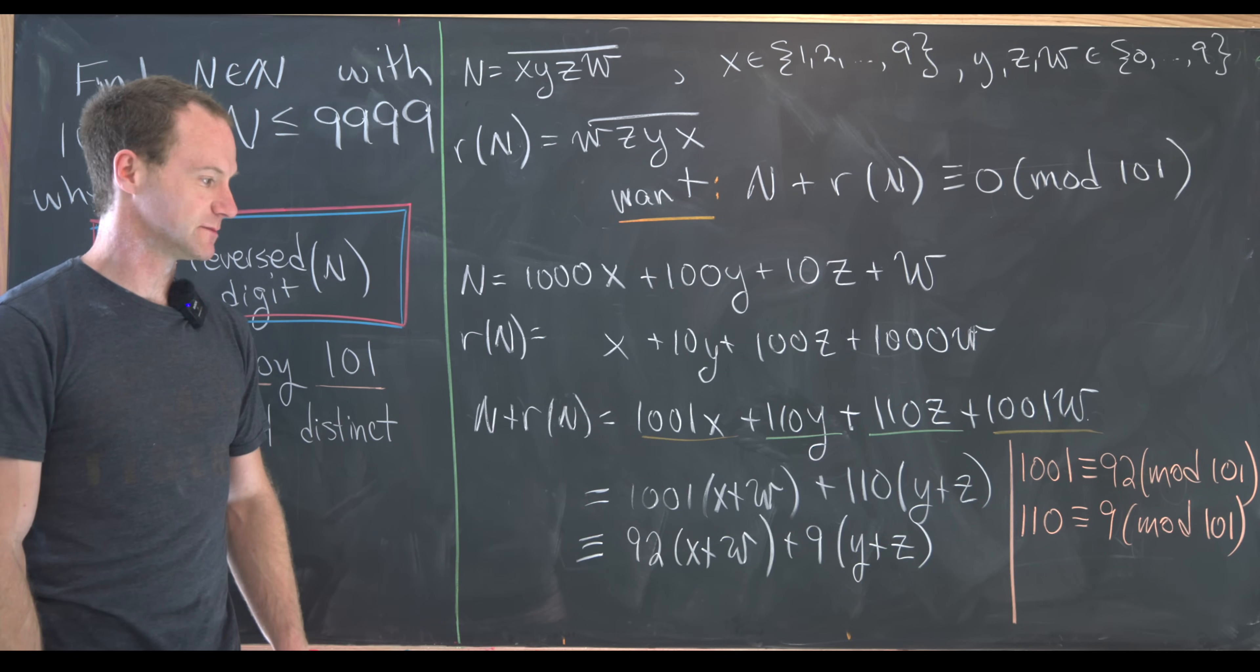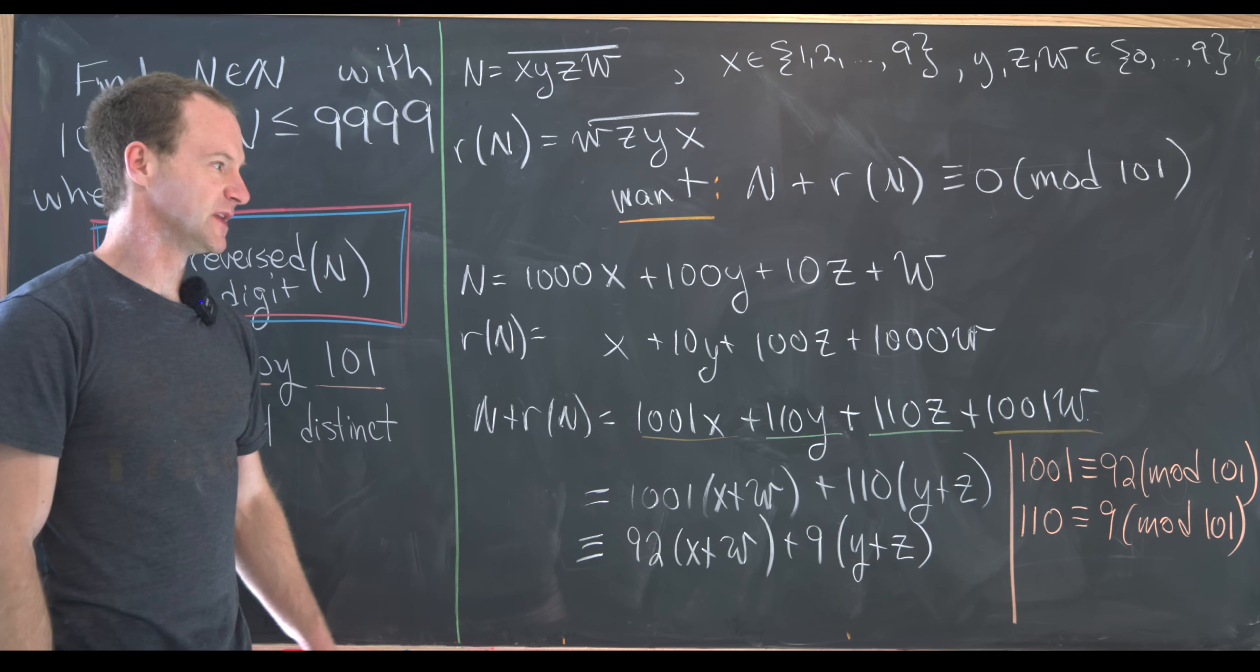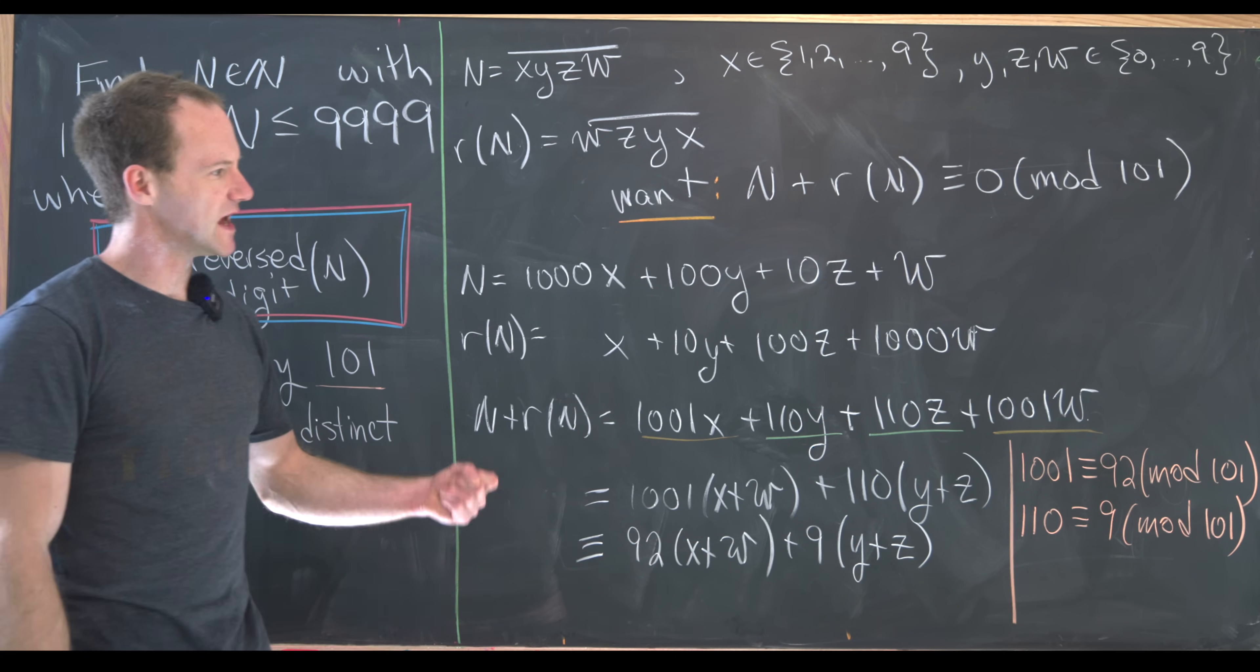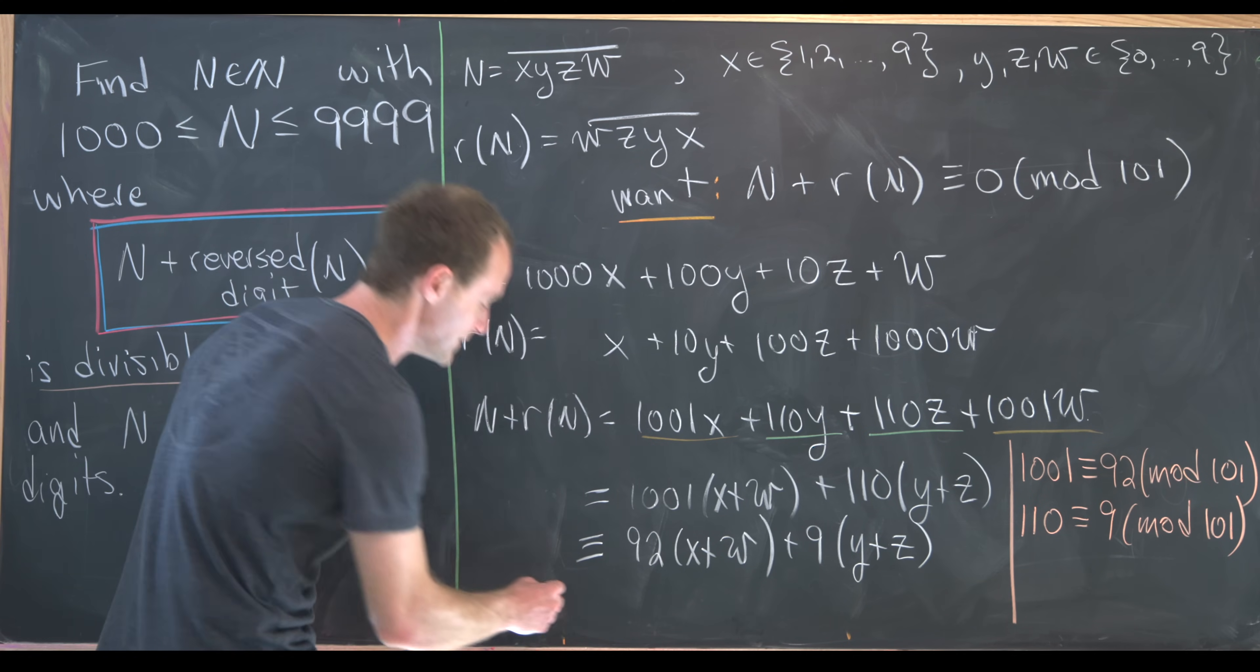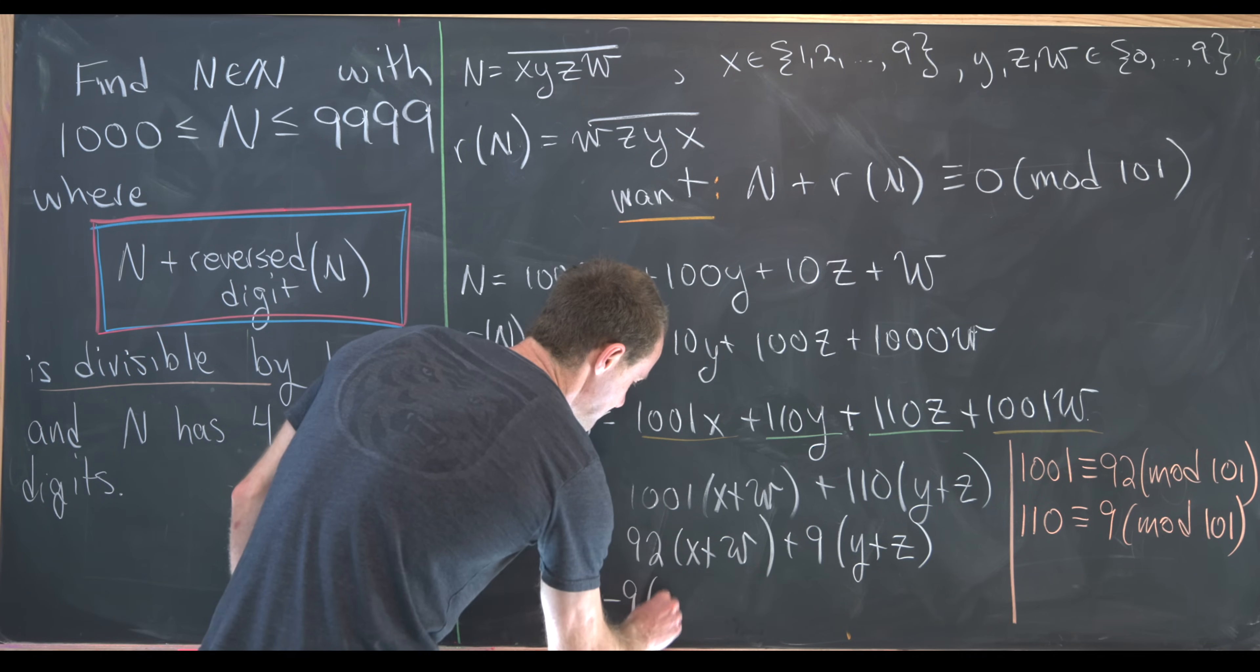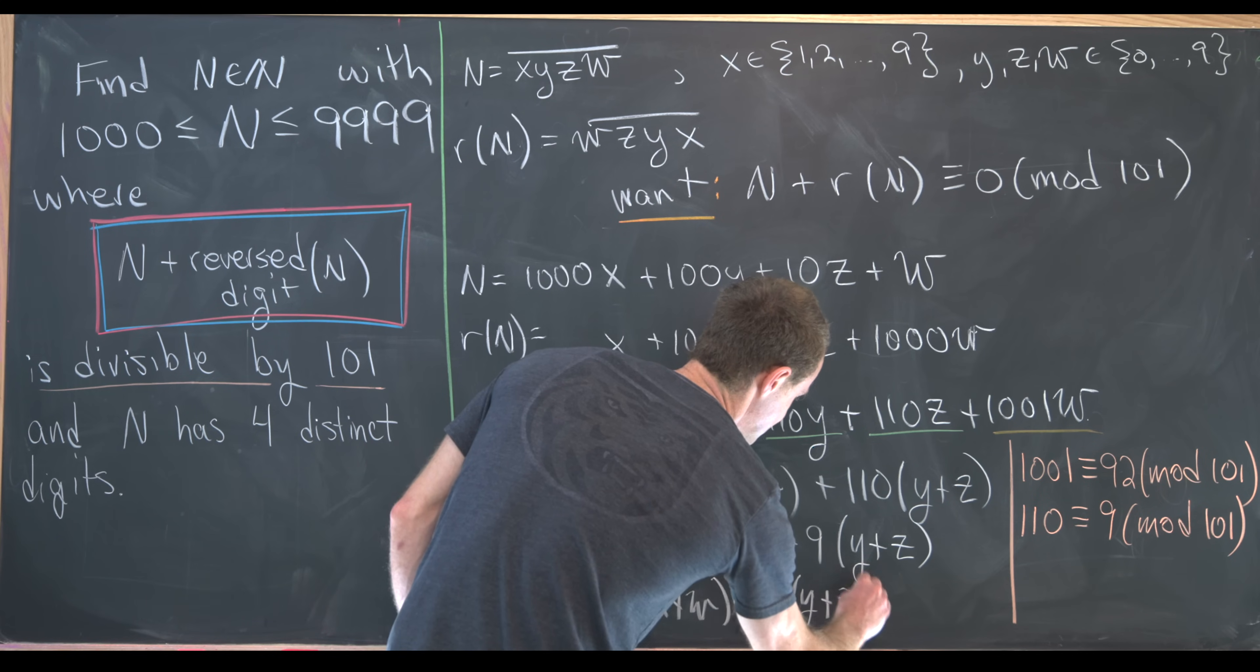We can do one more simplification. And that is notice that 92 is the same thing as minus 9 mod 101. And we can see that by subtracting 101 from 92 and see that we get minus 9. So this is congruent to minus 9 times X plus W plus 9 times Y plus Z.